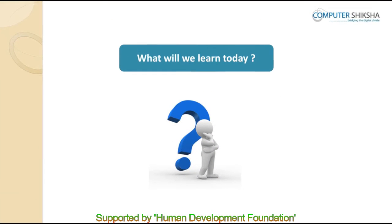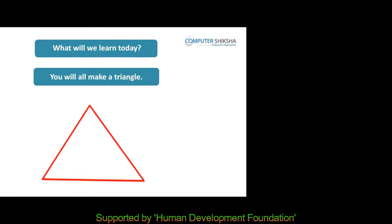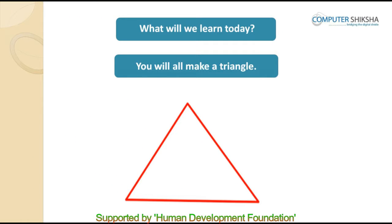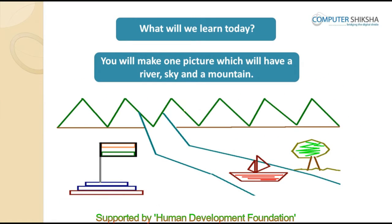In today's class, we are going to learn to make the following. In the first drawing, you will all make a triangle, and then in the next one, you will make many triangles inside the first triangle we made. And then in the end, all of you will make one picture which will have a river, the sky, and a mountain, and then all the students will fill colors in their drawings.